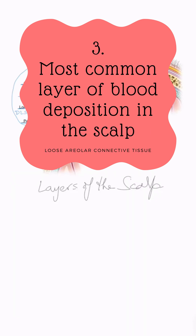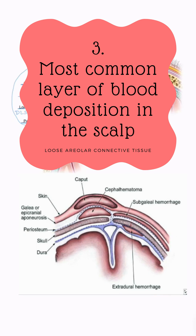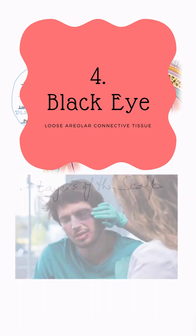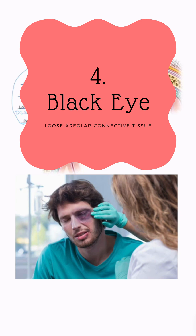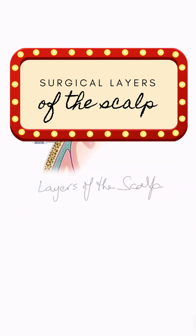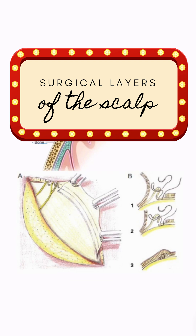Out of all the different layers, the most bleeding and hematoma formation occurs in the fourth layer — between the galea and the periosteum. This is the sub-galeal hematoma. You may have heard of 'black eye' — because the loose areolar tissue is the commonest site of blood collection.